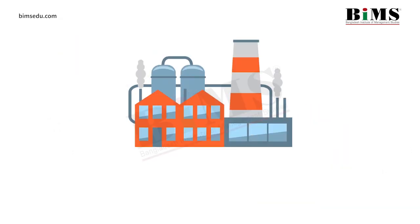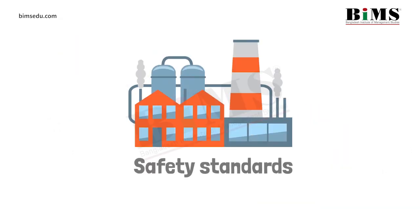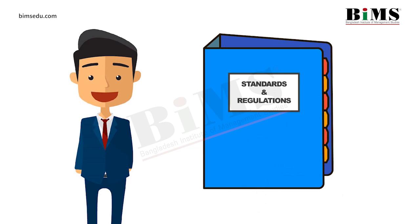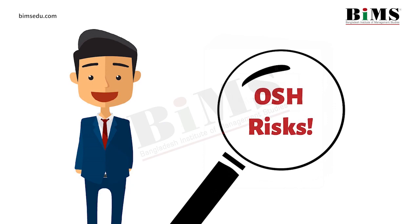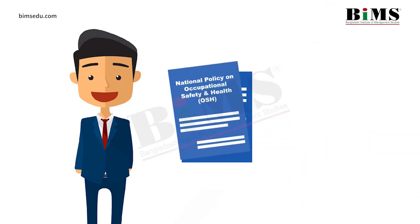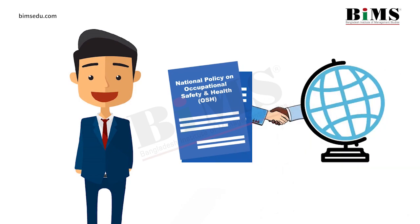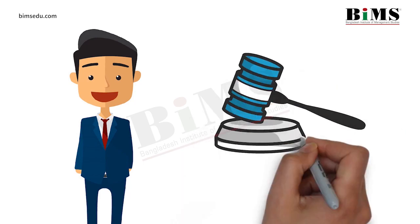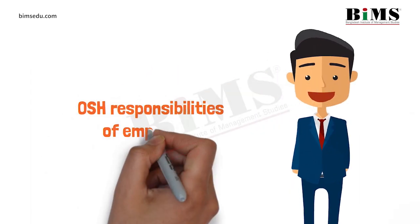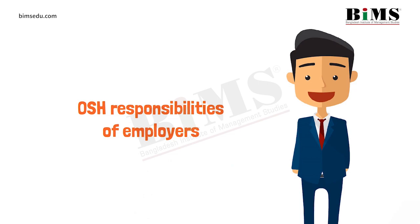For example, during factory construction, safety standards must be followed by the employers. Employers must comply with all standards and regulations related to internal safety. Employers need to identify all OSH risks within their organizations, educate all workers on OSH risks and the potential causes of accidents, and ensure OHS in compliance with international conventions and standards. Employers need to implement national laws and regulations related to OSH. These are just some major OSH responsibilities of employers as per national OSH policy.